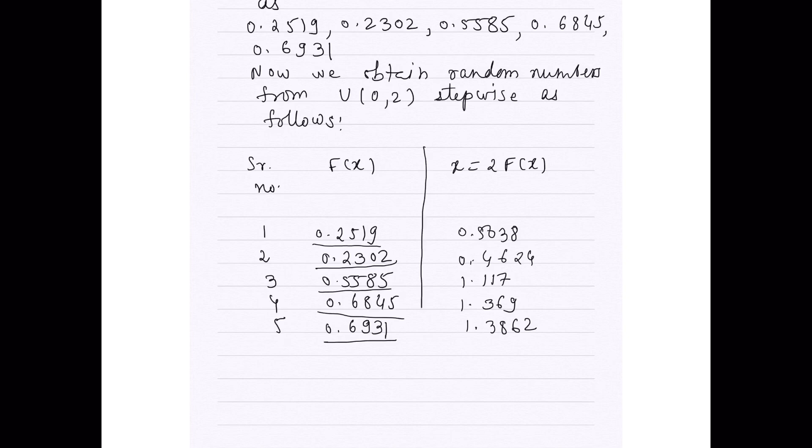So, the last column gives us a random sample or random numbers following uniform distribution with parameters 0 and 2, which is also known as model sampling or simulation from uniform distribution with parameters a equal to 0 and b equal to 2.